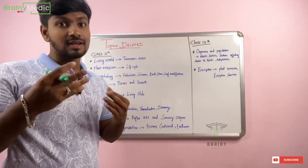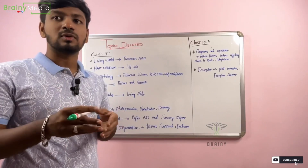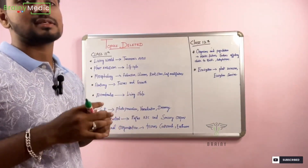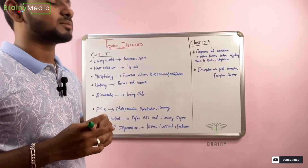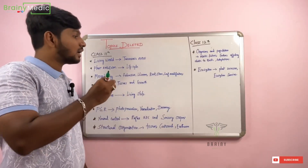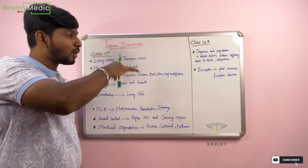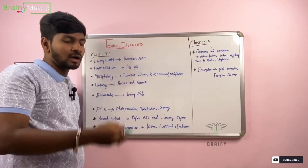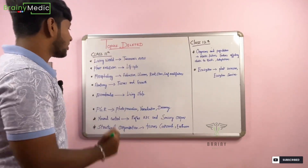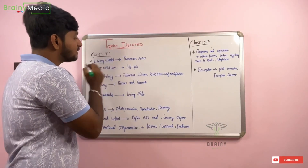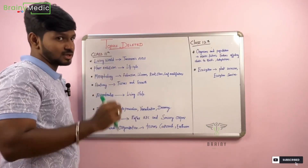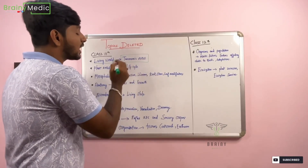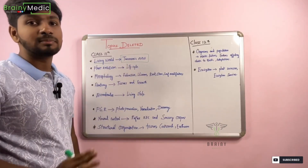How many topics are deleted? Some lessons and units are deleted. You can delete topics. For example, Living World is the first chapter. In the first chapter, Taxonomic Aid is covered.